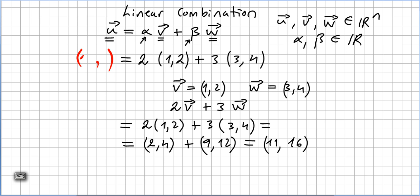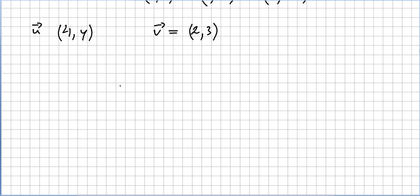So if you look well, (11,16), this vector, so this will be vector u, is a linear combination of these two vectors, vector v and vector w. So if we can write a vector with scalar products of two vectors, we say that this vector u is a linear combination of these two.